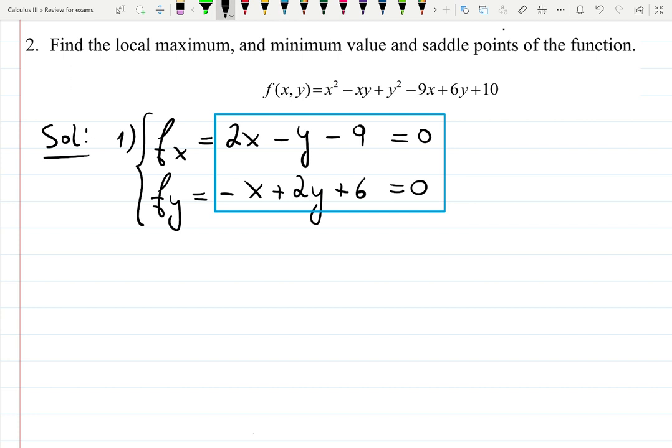Now there are several ways to solve it. You can solve for y and plug it in - that's called substitution method. Or you can do elimination method. Whatever you feel like. I will solve for y from the first equation. y seems to be 2x minus 9. I will put it in the box because later I will need it to find y's. Plug it into second equation. And I will get minus x plus 2(2x minus 9) plus 6 equals 0.